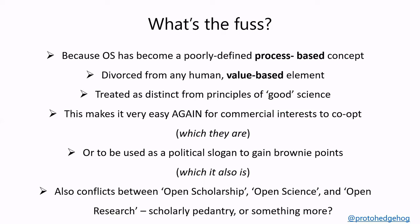This confusion makes it exceptionally easy for commercial interests to co-opt, and it becomes extremely easy for open science to be used as a political slogan to gain brownie points. This is definitively happening in Europe right now. This goes back to the conflicting definitions — we haven't defined open scholarship or open science properly at a foundational level. The lack of precision in this space leads to corruption of it, as we've seen in the UK over the last decade with open access.